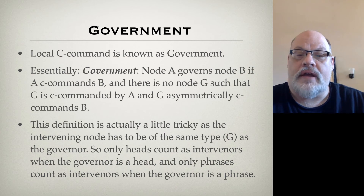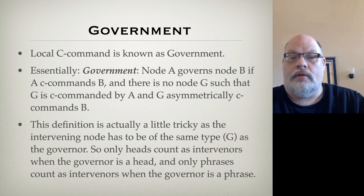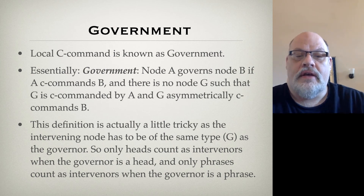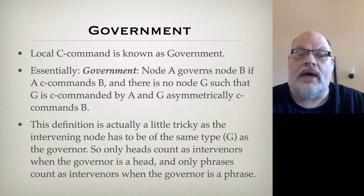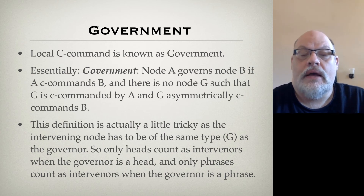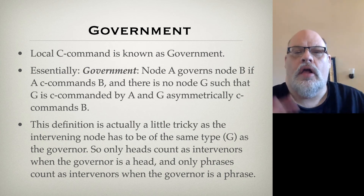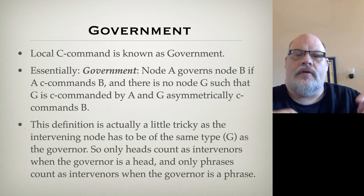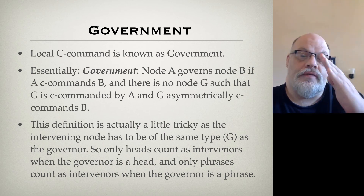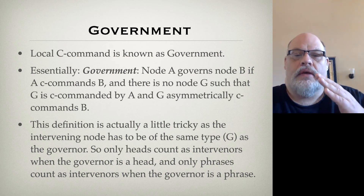A node governs another node if it C-commands it and there's no intervener — there's no node G such that G is C-commanded by A and A asymmetrically C-commands B. This definition is a little tricky because it turns out that it is what we call relativized, so what counts as the intervener can vary.